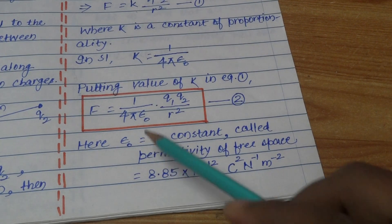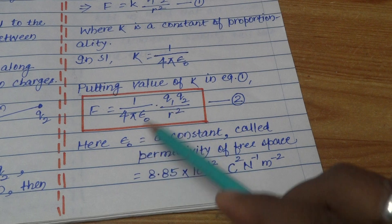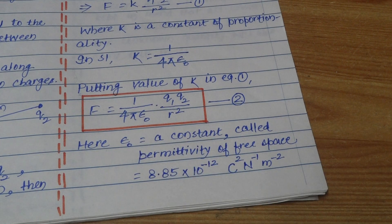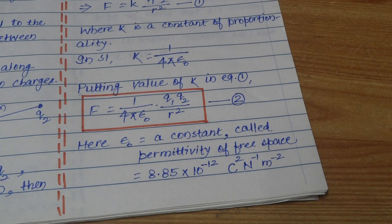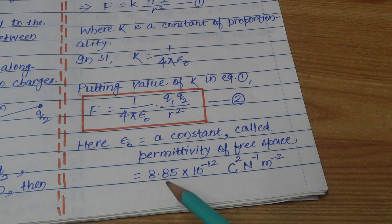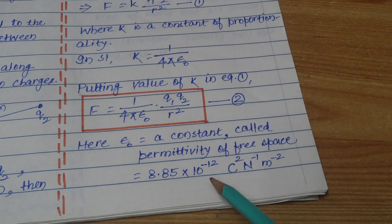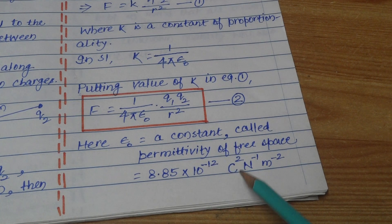Epsilon naught in the formula is a constant. Its name is permittivity of free space. It has a fixed value of 8.85 × 10⁻¹² coulomb squared per newton per meter squared.